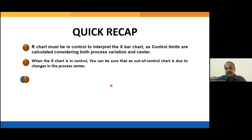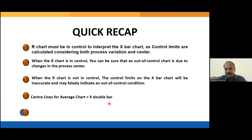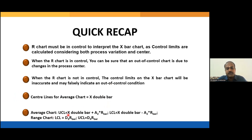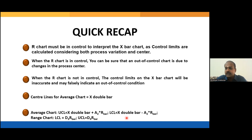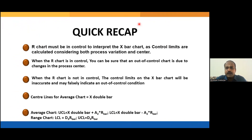The R chart must always be in control to interpret the X-bar chart; otherwise it has no meaning. When the R chart is under control, any out-of-control point in the X-bar chart is due to off-targeting or shifting of the process. Formulas summary: for the X-bar chart, center line = X-double-bar, UCL = X-double-bar + A2 × R-bar, LCL = X-double-bar − A2 × R-bar. For the R chart, center line = R-bar, UCL = D4 × R-bar, LCL = D3 × R-bar. D3, D4, and A2 are statistical constants depending on subgroup size.